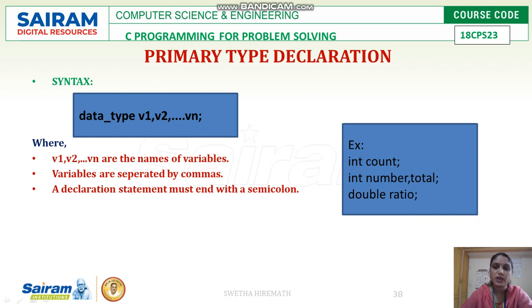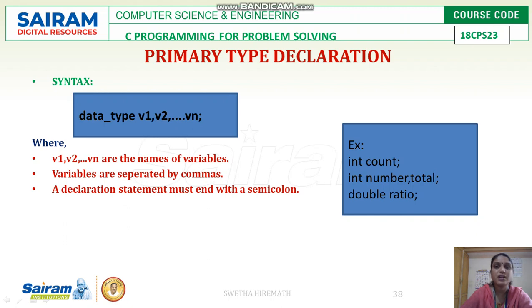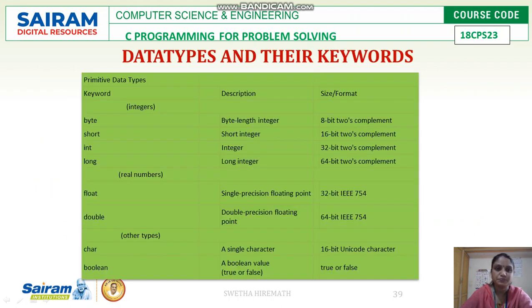Here are a few examples of how we declare a variable. The variable 'count' is of integer data type. 'Number' and 'total' are two variables of integer data type. 'Ratio' is one variable of double data type. These are examples of primary data type declaration.